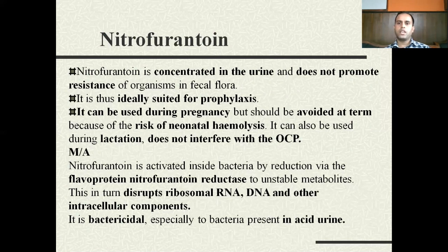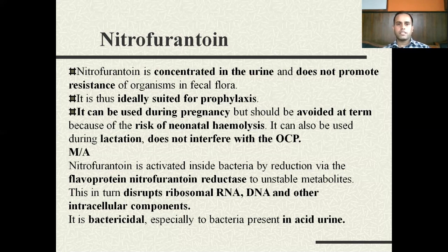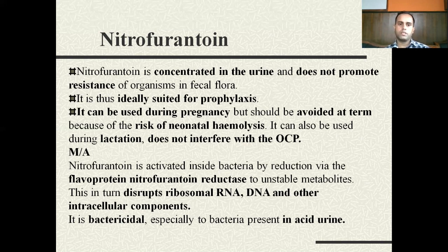Nitrofurantoin is concentrated in urine and does not promote the resistance of organisms in gut flora. It is therefore ideally suited for prophylaxis. It can be used during pregnancy, but should be avoided at term because of the risk of neonatal hemolysis — if neonatal hemolysis occurs, the baby can suffer from hemolytic anemia. Nowadays it is considered wise to avoid nitrofurantoin from 38 weeks to 42 weeks of pregnancy. It can be used during lactation and does not interfere with the oral contraceptive pill.